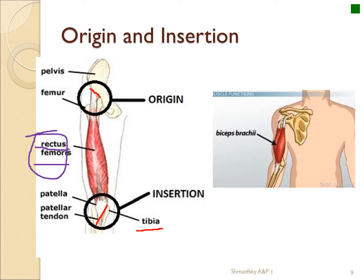For the rectus femoris, the pelvis and femur are the origin — the fixed attachment point. The insertion is primarily the tibia. Since this muscle is found anteriorly on the upper leg, its contraction pulls upward, causing extension of the lower leg. As another example, the biceps brachii is a prime mover that causes flexion of the lower arm. Its two tendons are braced on the scapula and a little on the head of the humerus — it's called biceps because it has two heads, two origin attachment points.